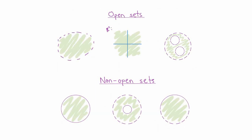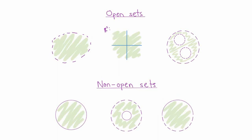An open set in Euclidean space is a set with the property that for every point in the set, I can find some ball around that point which is completely contained in the set. Another way to characterize open sets is that they don't contain any of their boundary points. It's also worth pointing out that no matter what n is, Rn itself always satisfies the definition of being an open set.